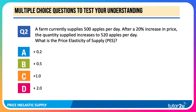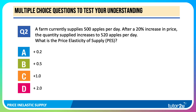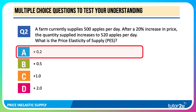Question two is a calculation question. A farm currently supplies 500 apples per day. After a 20% increase in price, the quantity supplied increases to 520 apples per day. What is the price elasticity of supply? The answer is 0.2 — a 20% increase in price leads to only a 4% increase in supply.